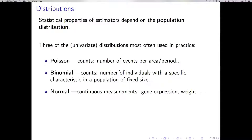In this video we will talk about three probability distributions. Properties of estimators depend on their sampling distributions, and that's why understanding probability distributions is important. Here we will talk about three univariate distributions used quite often in practice. Two of them, Poisson and binomial, are used for counts and are discrete, and the third one is the well-known normal distribution that is used for continuous measurements. We will illustrate some of the characteristics of these distributions and how we can use them in MATLAB.